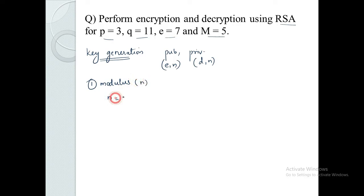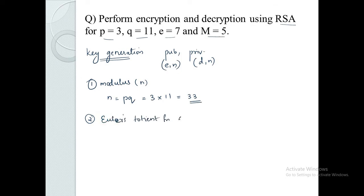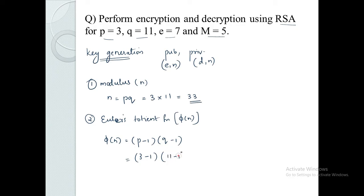The value of N is P into Q, which is 3 into 11, so N equals 33. The second step is to calculate Euler's Totient function, phi of N. Phi of N equals P minus 1 into Q minus 1, that is 3 minus 1 into 11 minus 1, which is 2 into 10. So phi of N equals 20.